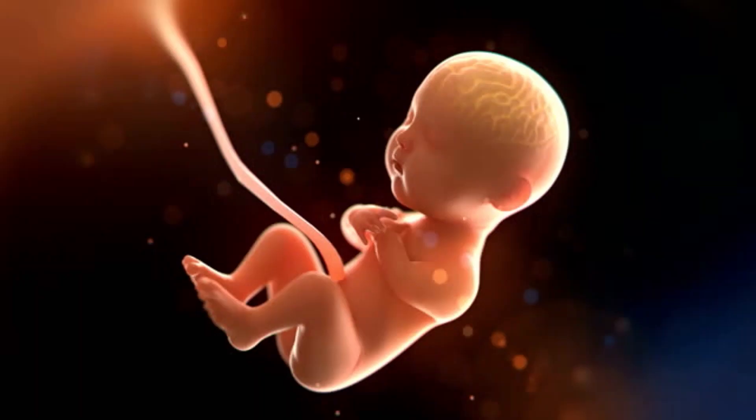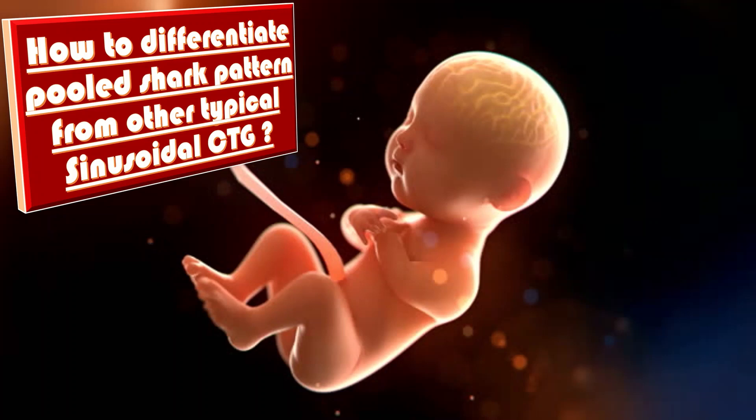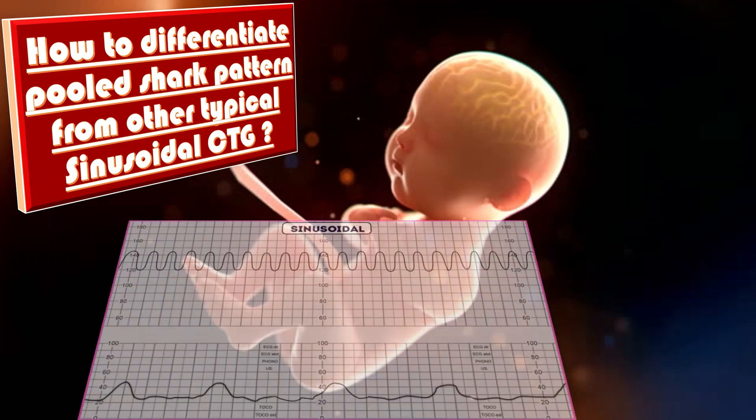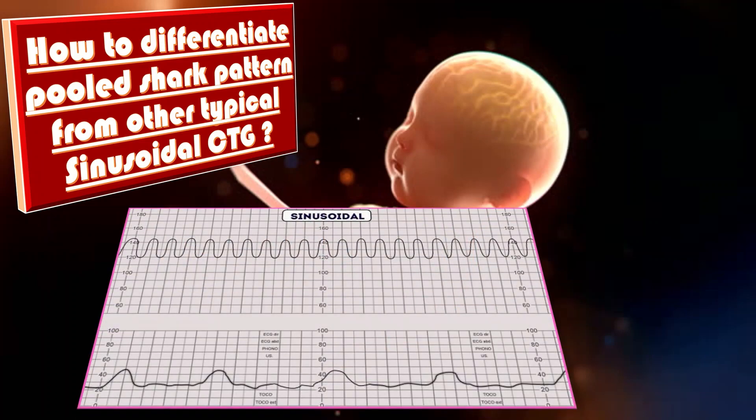How to differentiate the pool shark pattern from the typical sinusoidal CTG? The typical sinusoidal pattern appears as a regular smooth undulating signal resembling a sine wave, with an amplitude of 5–15 beats per minute and a frequency of 3–5 cycles per minute. This pattern lasts more than 30 minutes and coincides with absent accelerations.